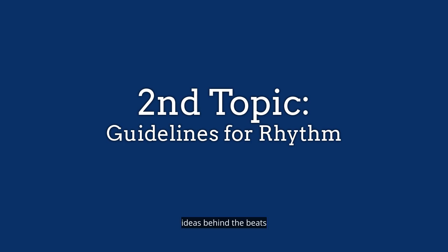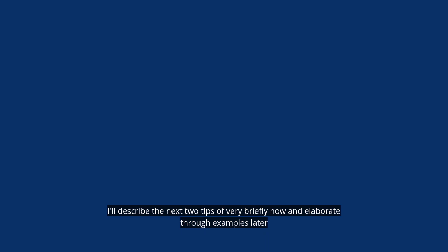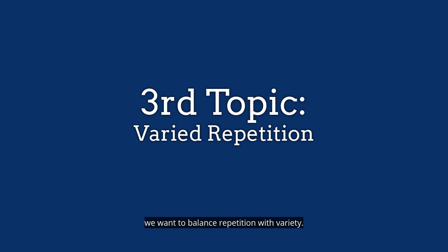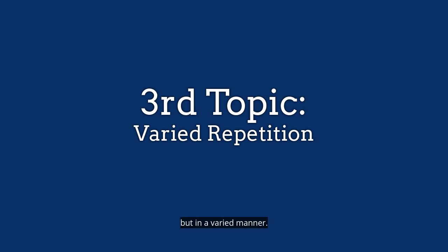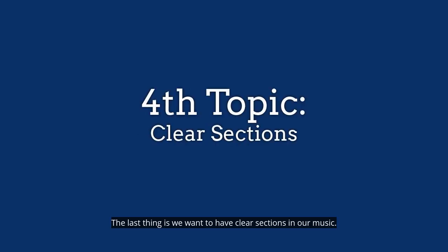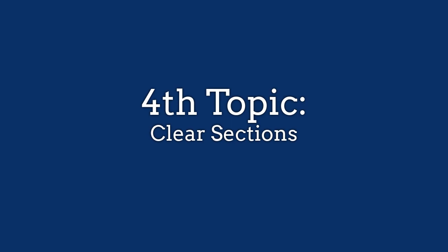I'll describe the next two tips very briefly and elaborate through examples later, because these concepts are really better understood through examples. When we write music, we want to balance repetition with variety — we want to be repetitive, but in a varied manner. This allows the music to have unity without being monotonous. The last point is we want to have clear sections in our music, and this will happen through rhythm and melodic contour.